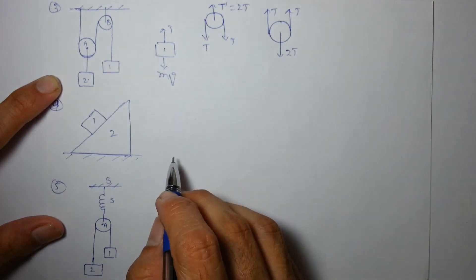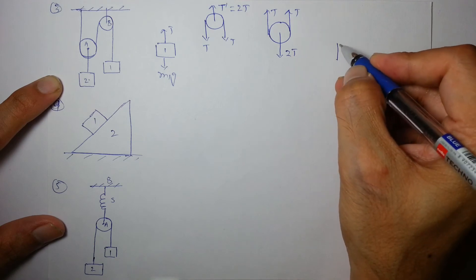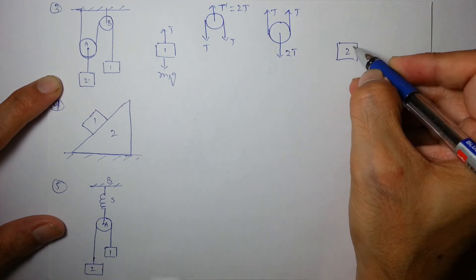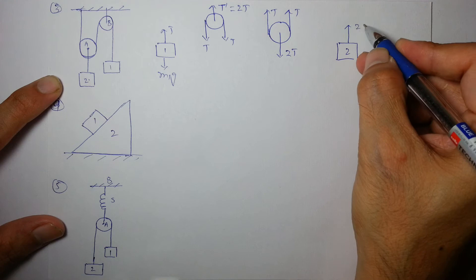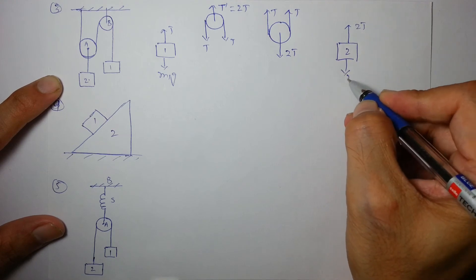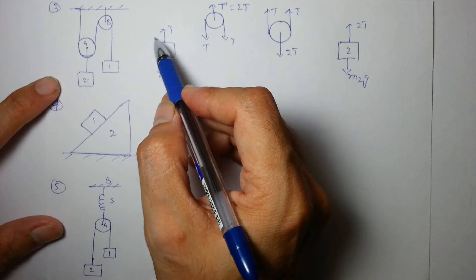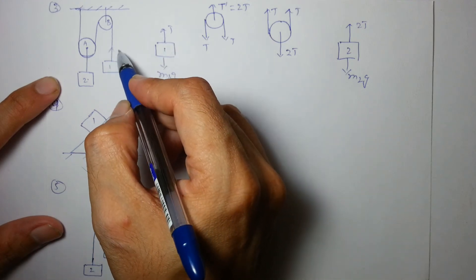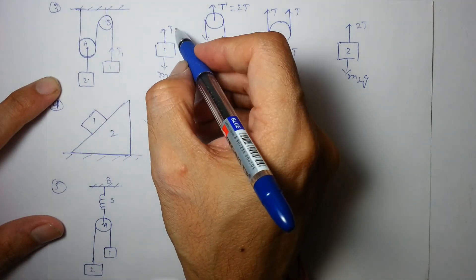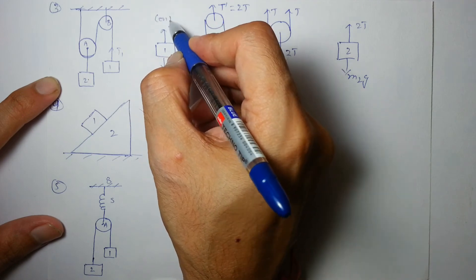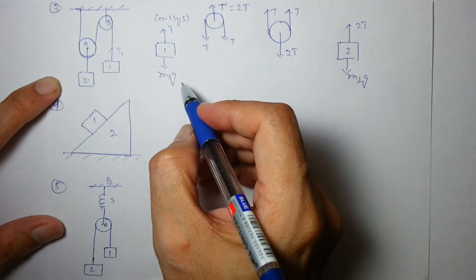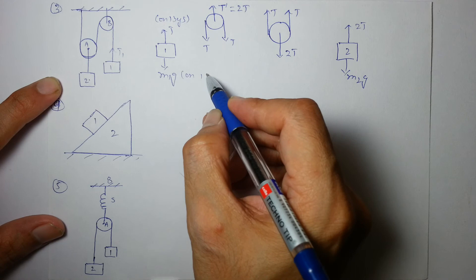Again, on the block two, upward direction 2t, and this will be m2g. Again, along the string, away from the object on block one, this is on one by string, this is on one by earth.